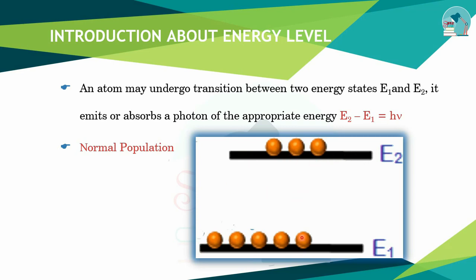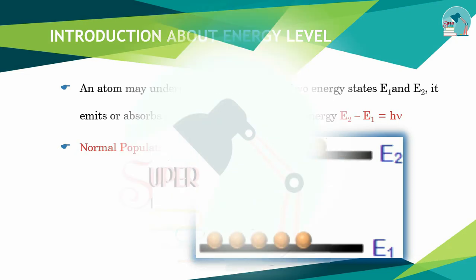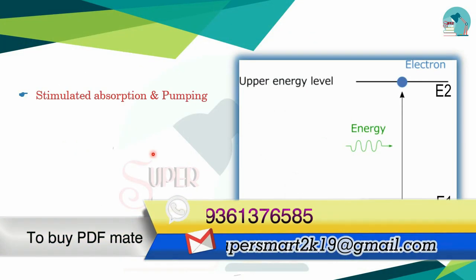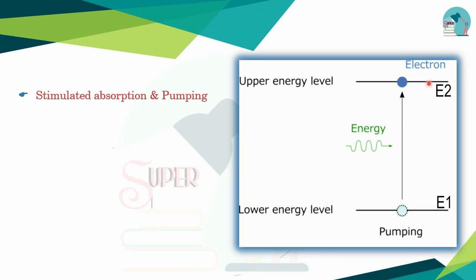If you compare the atom number, you will compare the atom number at the bottom. This is normal population — if you have 5 at bottom you will have 3 at top, so this is normal population. Next, stimulated absorption and pumping. This is a lower energy level and this is the upper energy level. One atom is in the upper energy level — it absorbs energy and gets excited. This is stimulated absorption and pumping.